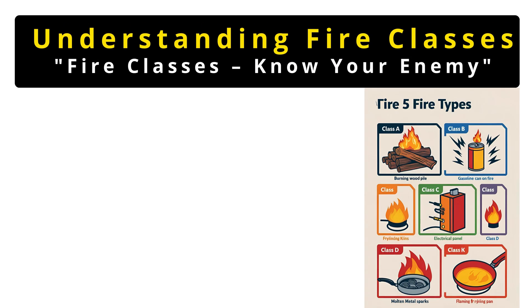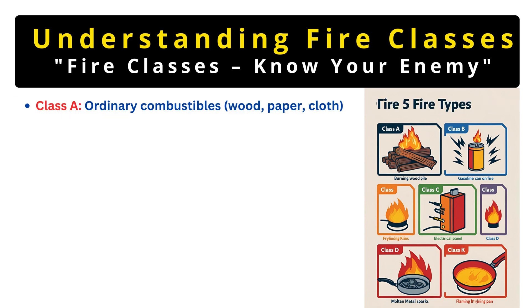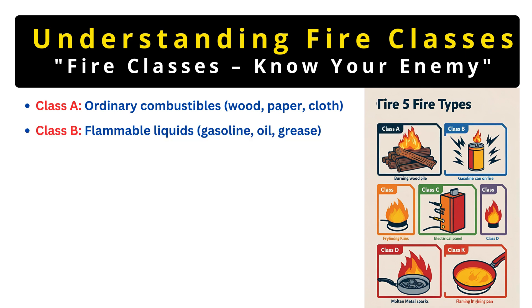Before we dive into extinguishers, let's quickly talk about fire classes. Fires are categorized based on what's burning, and each type requires a different approach. Class A fires involve everyday materials like wood, paper, and cloth — things you'd find in a typical house fire. Class B covers flammable liquids like gasoline, oil, or paint. These fires spread fast and can be extremely dangerous.